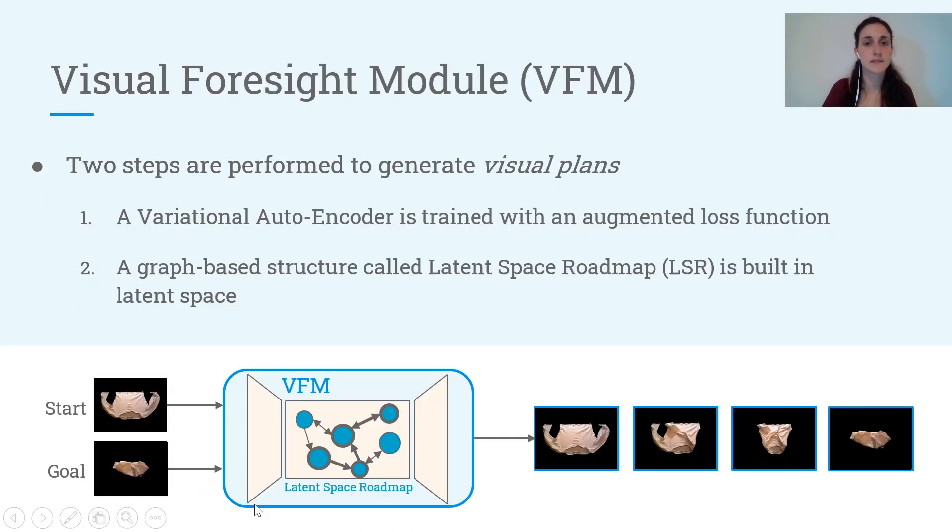So on the basis of this dataset, we can build our visual foresight module that produces the visual plans. And for this purpose, we first train a variational autoencoder with an augmented loss function that is based on the action-no action pairs.